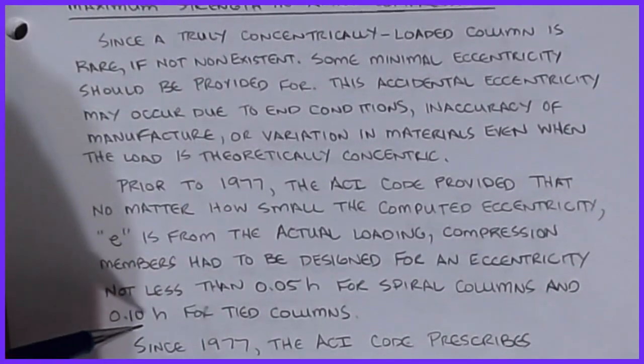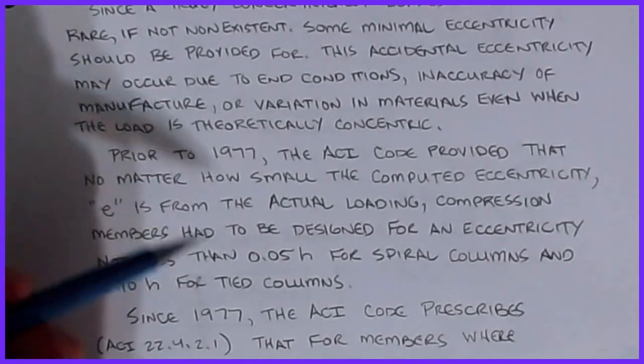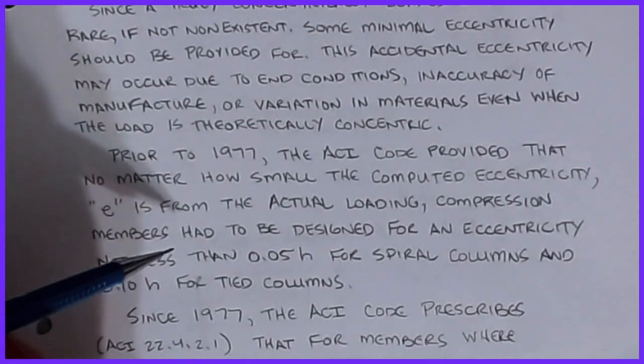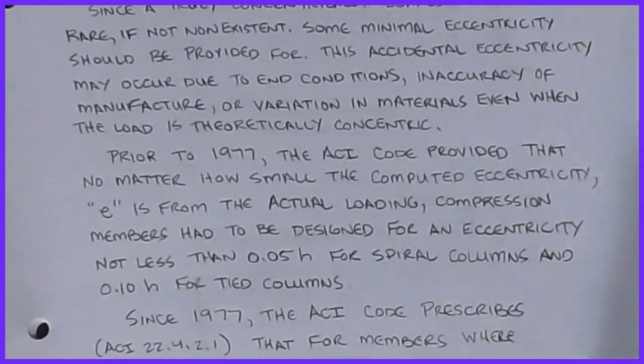Basically it's saying that for any column that's built, there has to be a minimum eccentricity applied. Back in the day it used to be five percent of the smallest dimension for a spiral column, and for a tied column it was ten percent of that dimension depending on the bending axis.